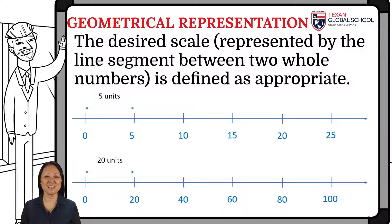The second number line uses 20 units, thus representing 0, 20, 40, 60, 80. We can define the scale as appropriate. It can even be started at a non-zero number if necessary.